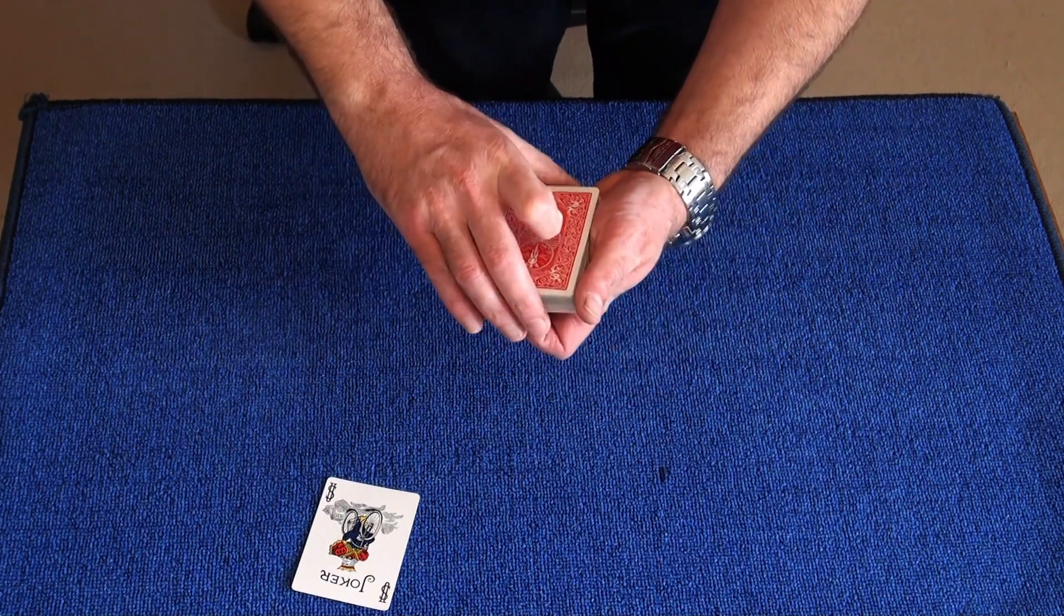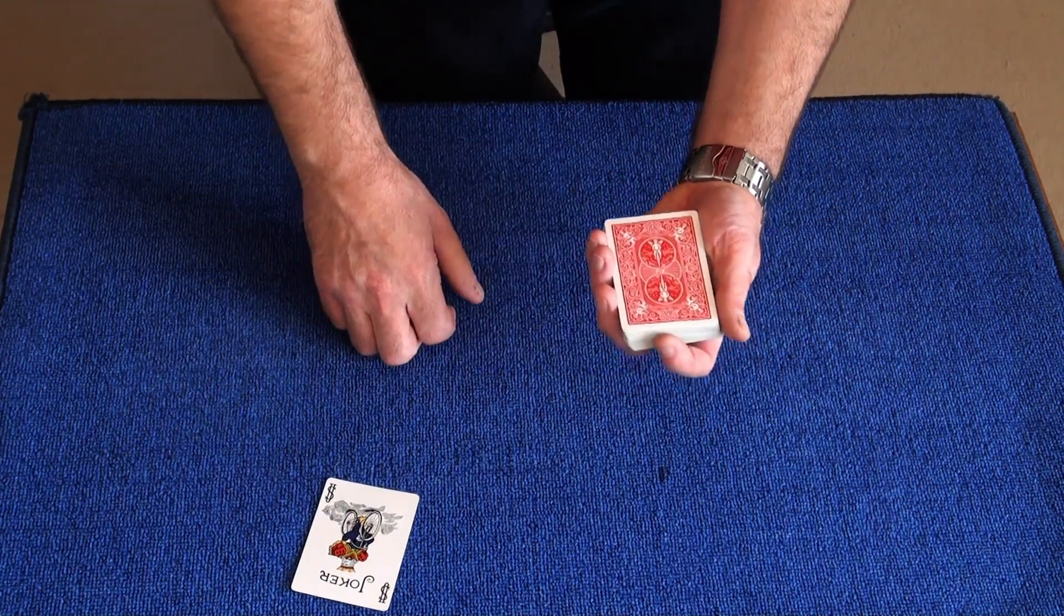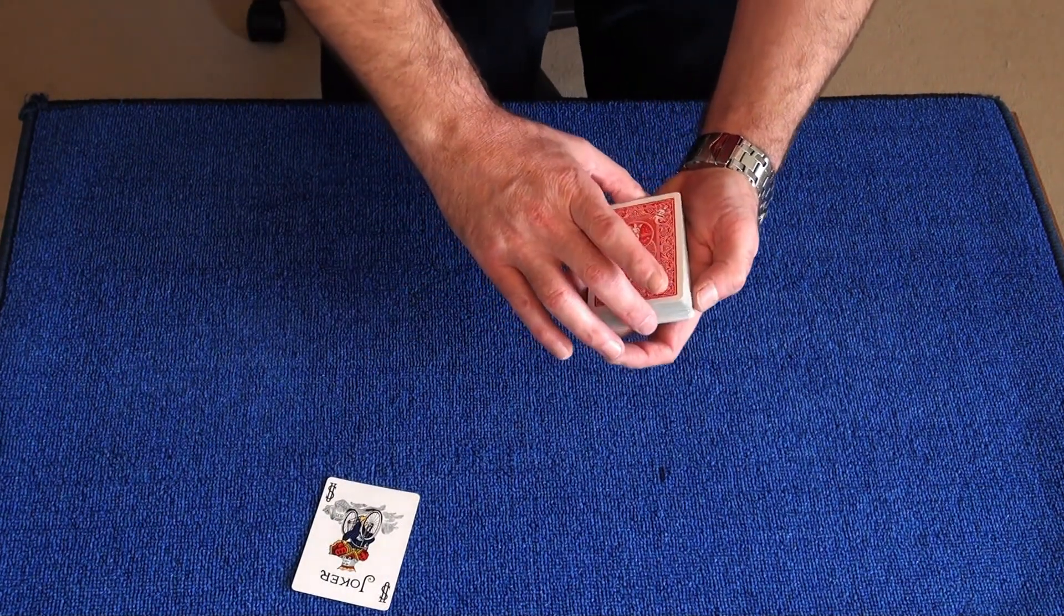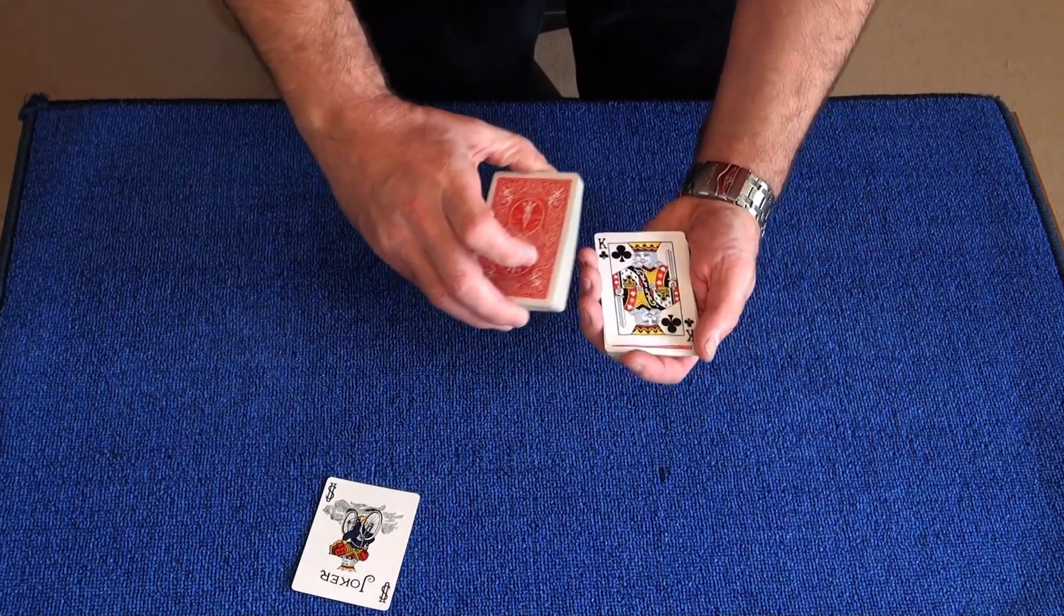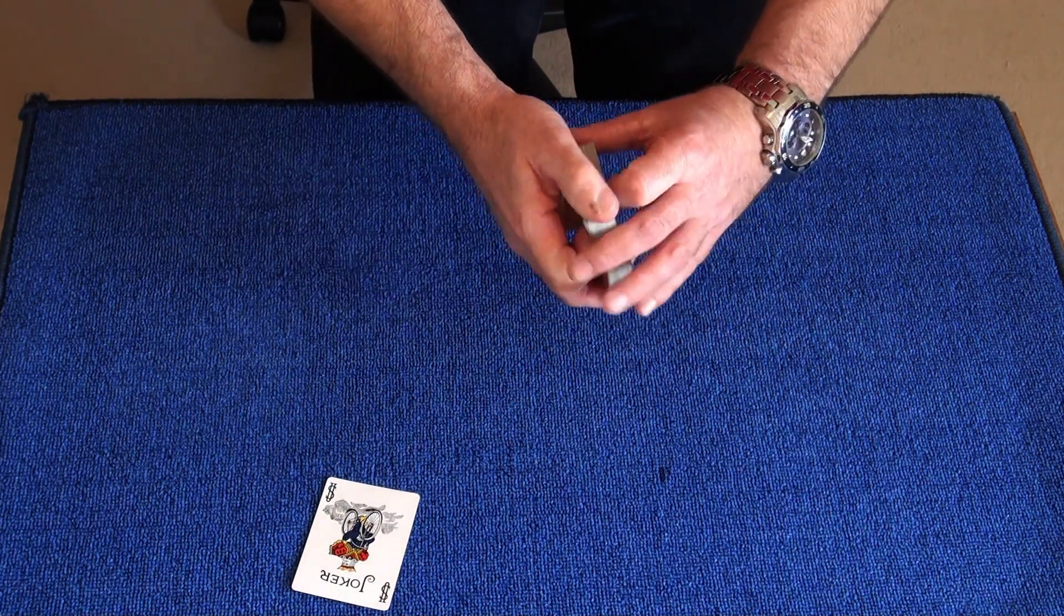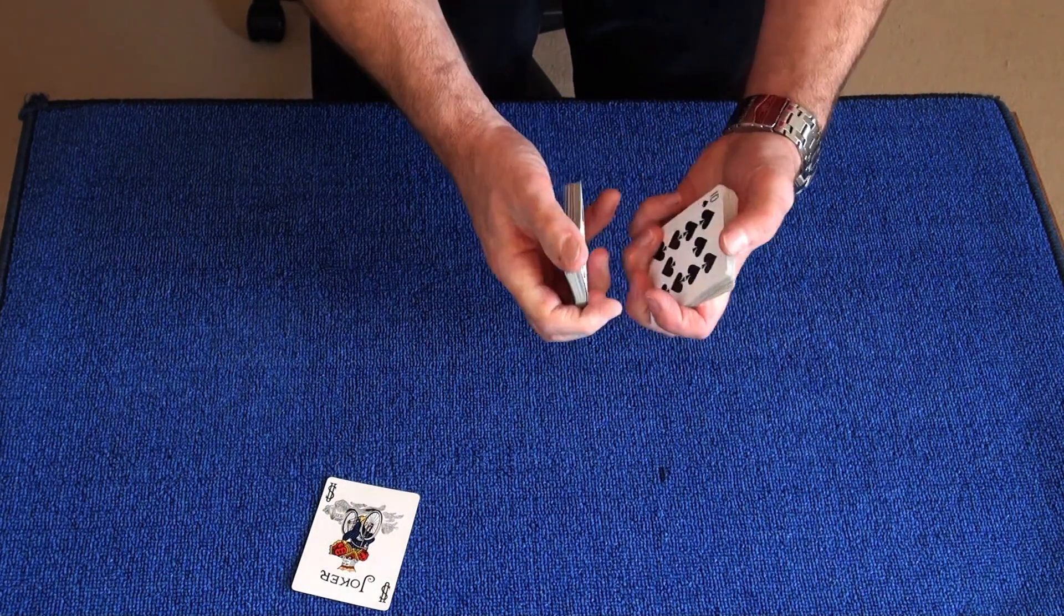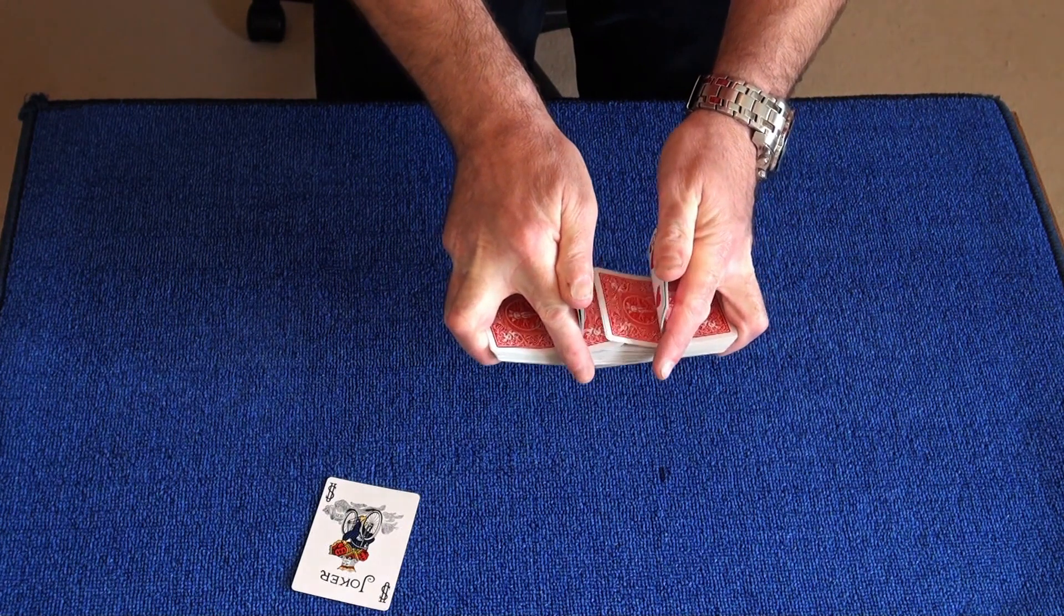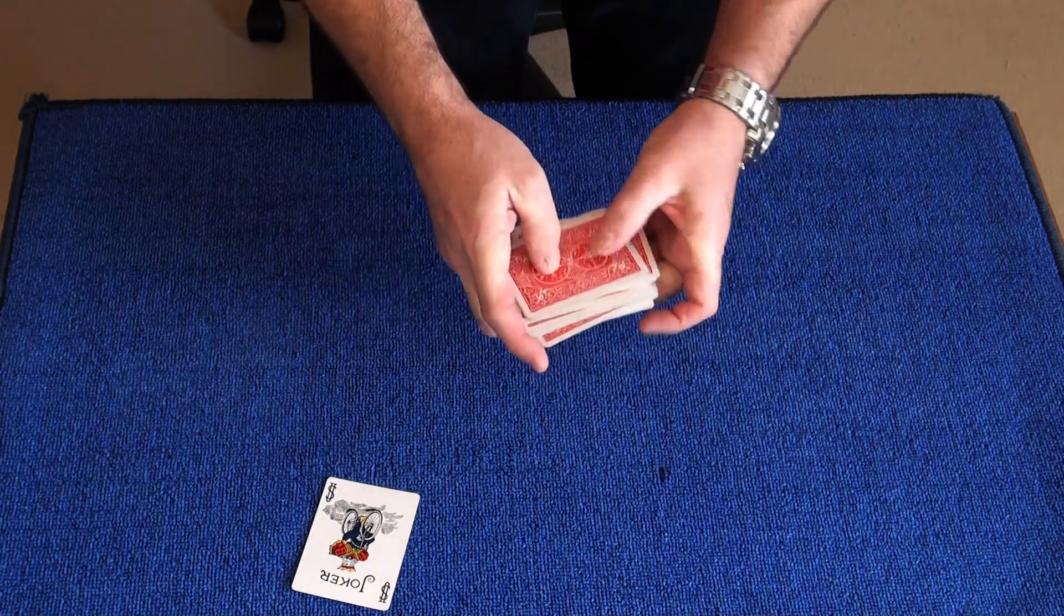We'll turn that card over. You say to the second spectator, I want you to cut somewhere near the bottom. Now they cut about there and we'll flip that card over. Now we'll proceed to give the deck a shuffle.